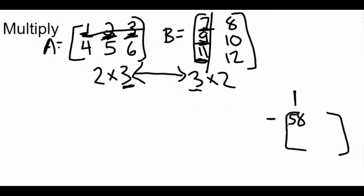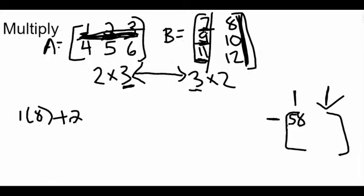Otherwise, if we want to go ahead and move on here, so let's now do first row, second column there, so that top right spot. So what we're going to do is we're going to take our first row, and now we're looking at the second column. So first times first, that's 1 times 8, plus the second times the second, so that's 2 times 10, plus the third times the third, so that's 3 times 12. Then we need to go ahead and multiply this all together, so 1 times 8 is 8.